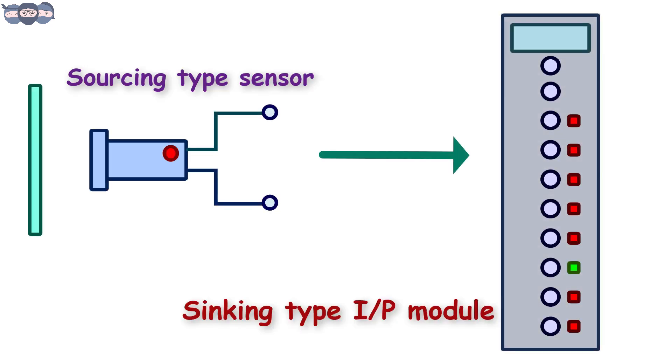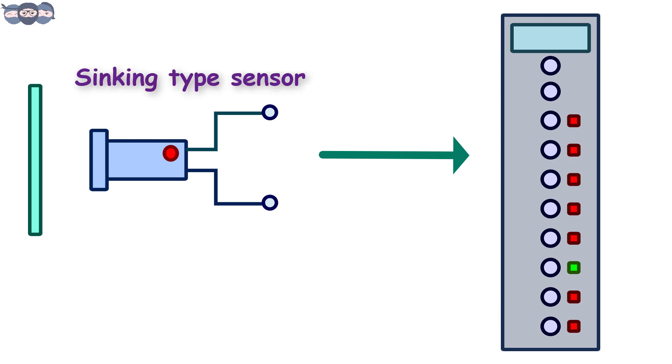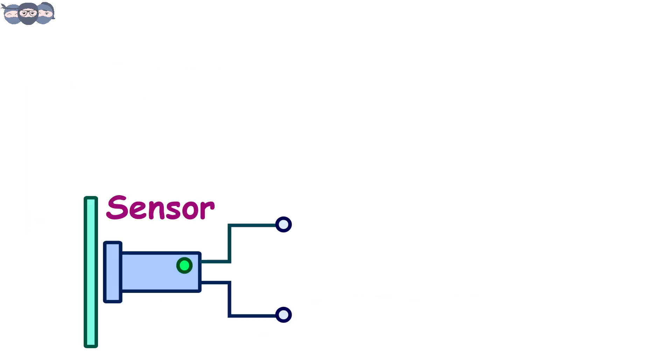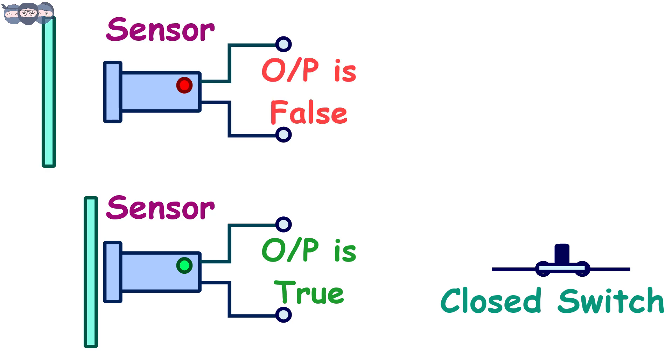If the sensor is a sinking type, then the module would be a sourcing type. When the sensor gives a true condition, it acts as a closed switch, and in false condition, it acts as an open switch.